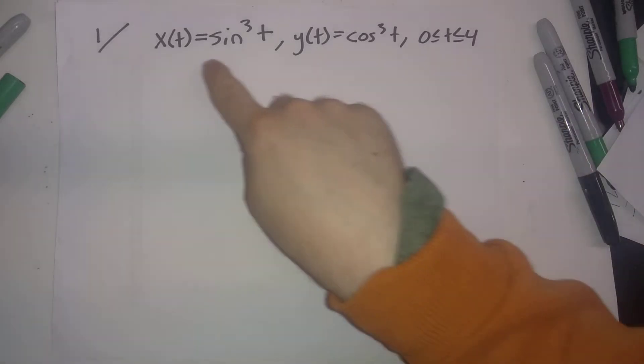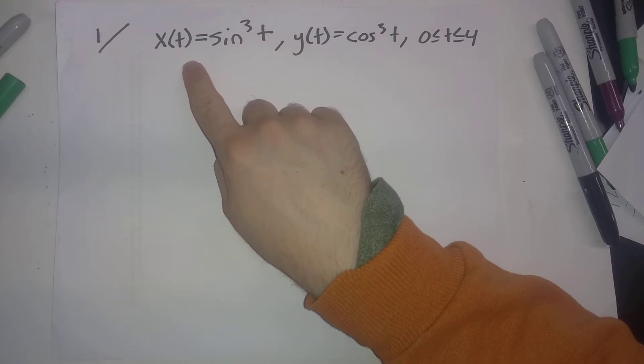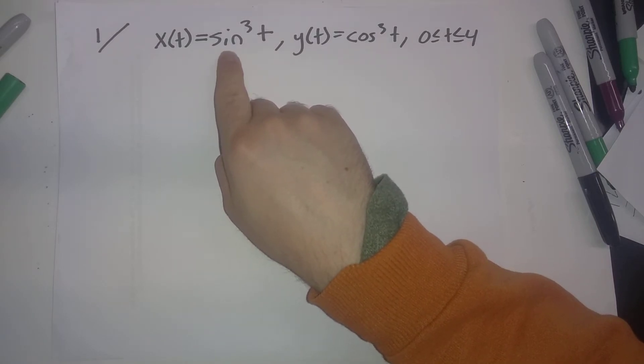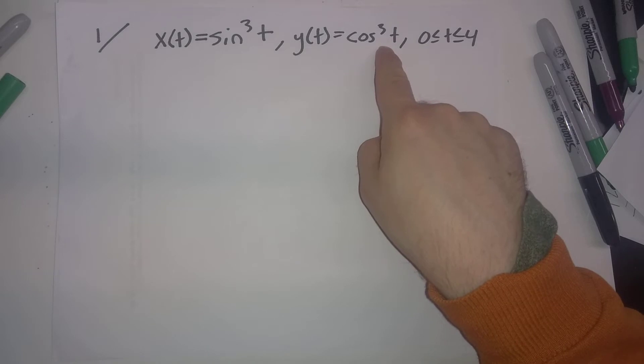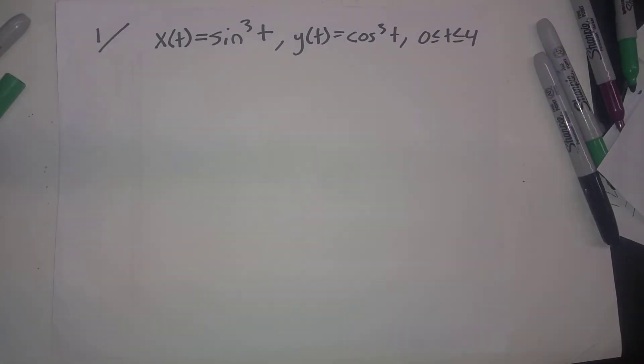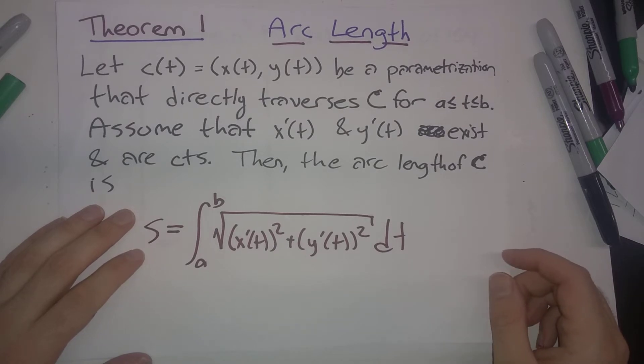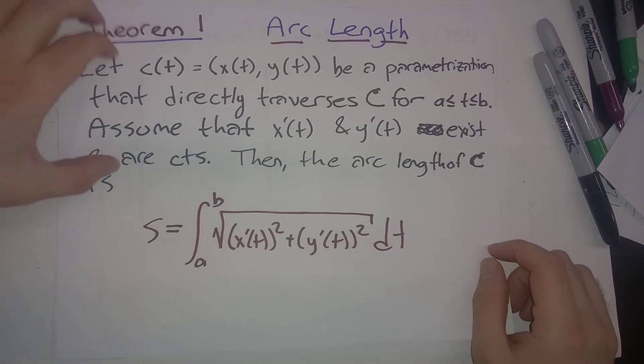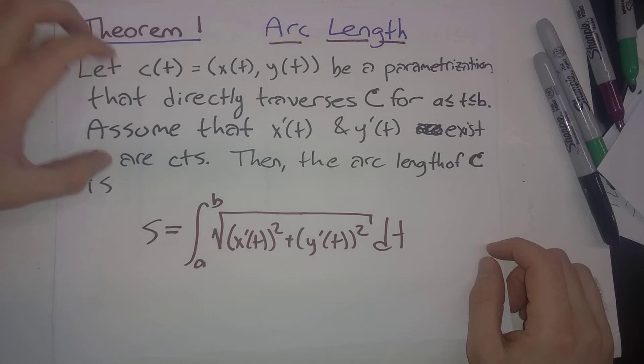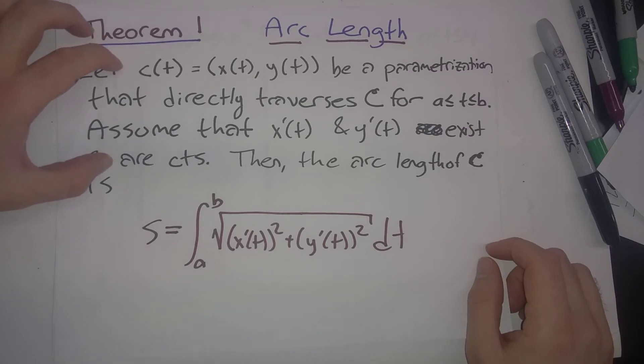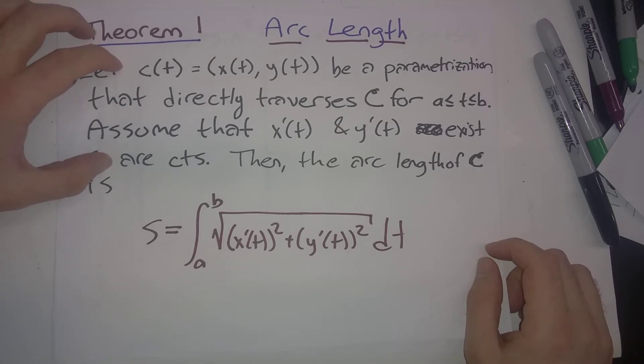The first problem asks us to find the length of the parametric curve x(t) = sin³t, y(t) = cos³t, where t runs from 0 to π/4. For this one, we're going to use our arc length formula, and everything up here satisfies this problem.